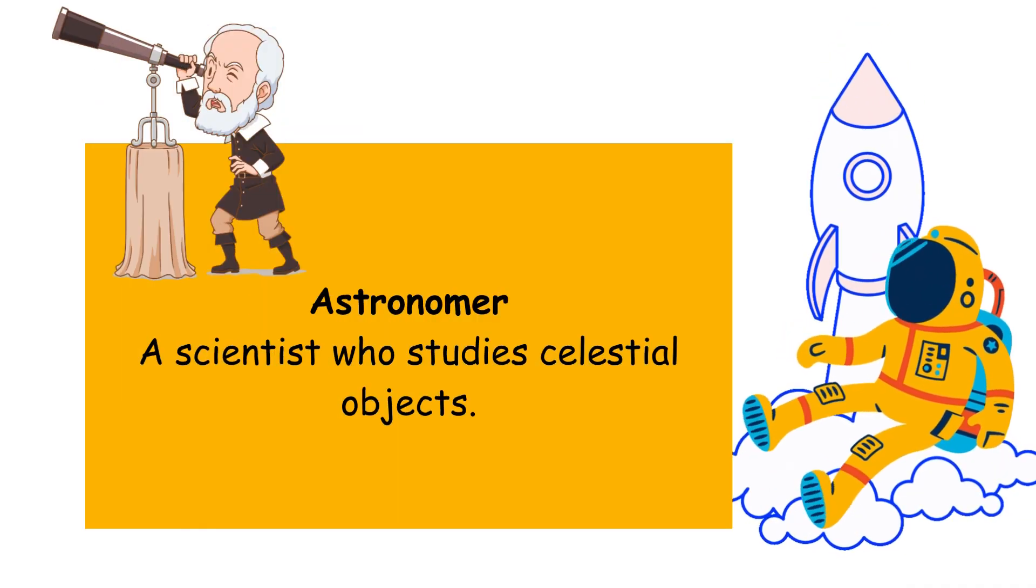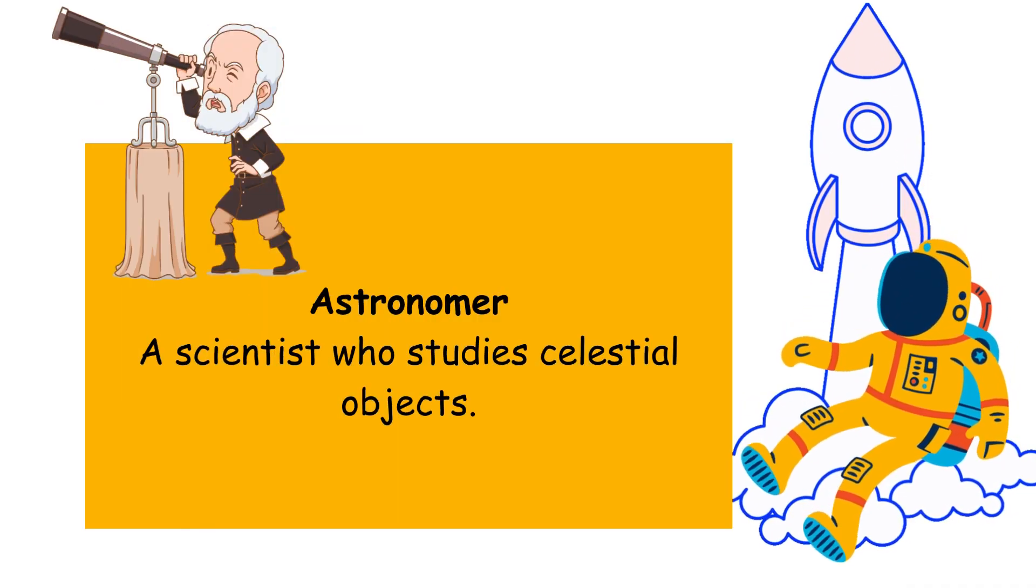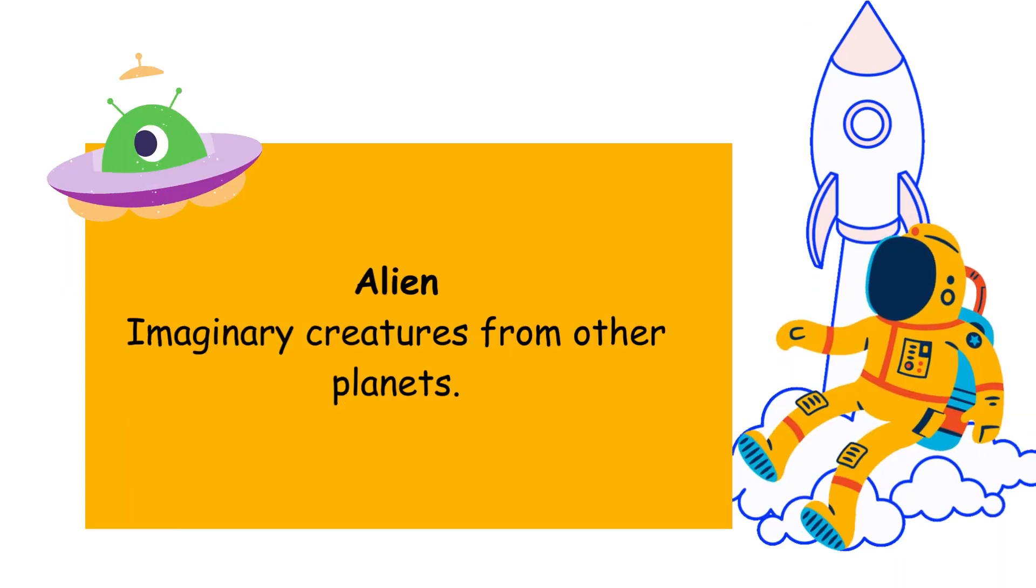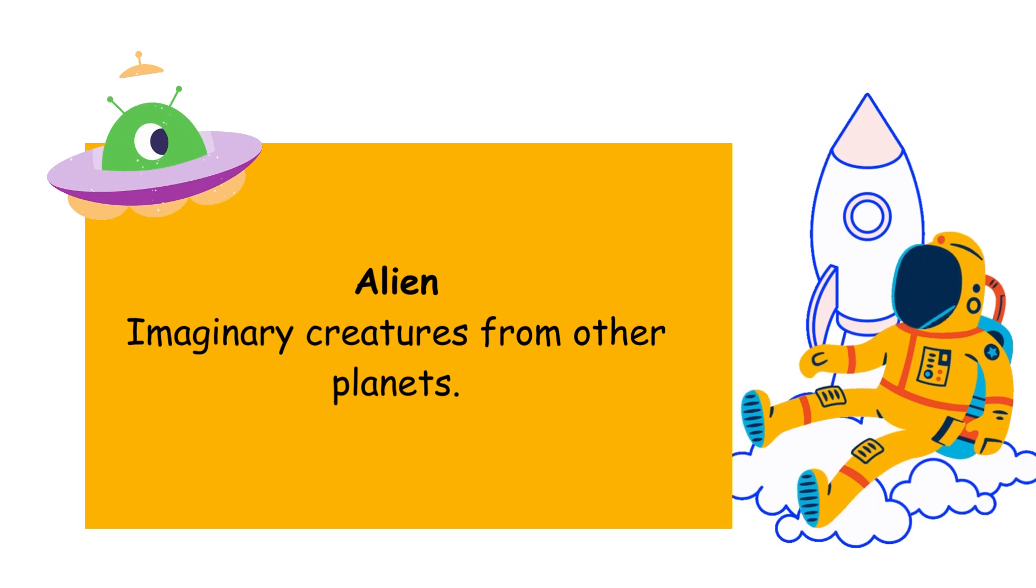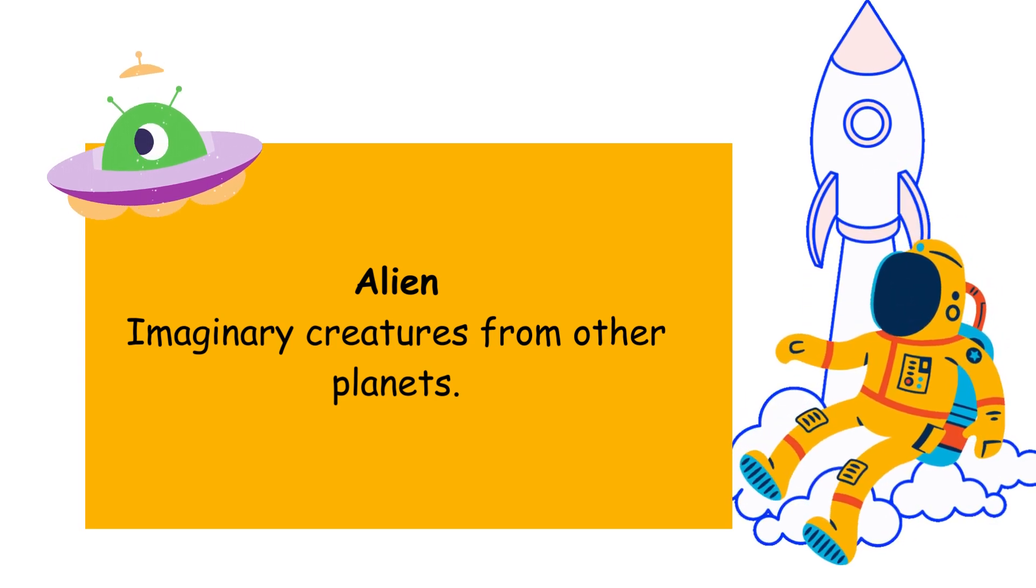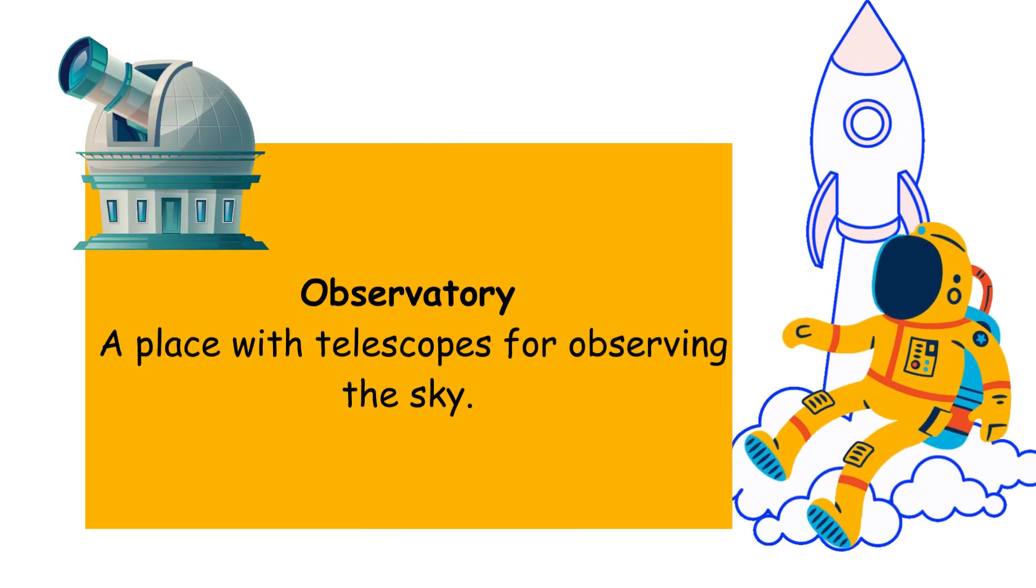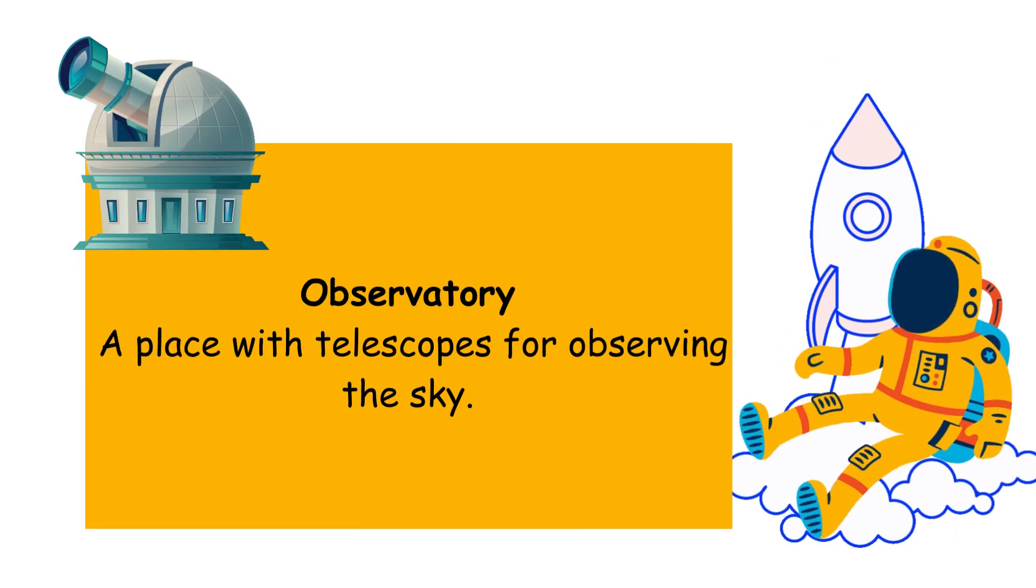Astronomer: a scientist who studies celestial objects. Alien: imaginary creatures from other planets. Observatory: a place with telescopes for observing the sky.